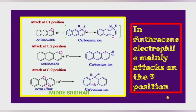In anthracene, an electrophile may attack any of the alpha, beta, and gamma positions. When an electrophile attacks on anthracene it changes into a carbocation. The carbocation formed when the electrophile attacks on the gamma position is more stable than the carbocations formed when the electrophile attacks on the alpha or beta positions.